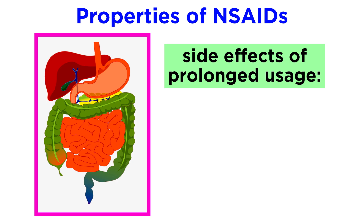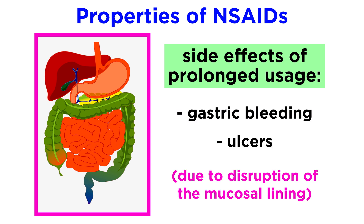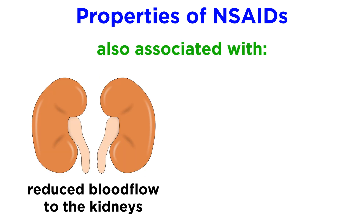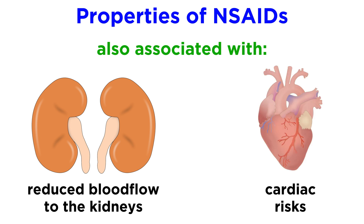These drugs also share some common side effects. Most commonly, prolonged NSAID use causes gastric bleeding and ulcers due to the persistent inhibition of COX-1 and the subsequent disruption of the mucosal lining of the gut. In the United States, this practice leads to an estimated 100,000 hospitalizations and somewhere between 3,000 and 16,000 deaths annually. NSAIDs can also reduce blood flow to the kidneys, resulting in possible kidney failure after prolonged use, and they are associated with cardiac risks as well.